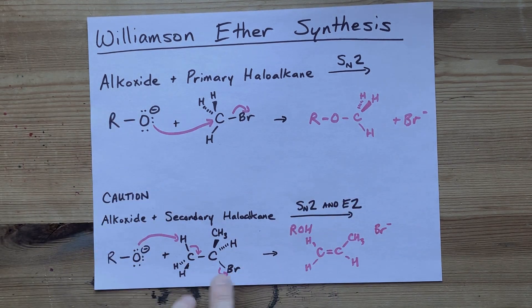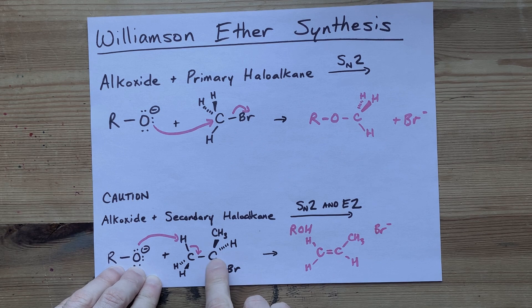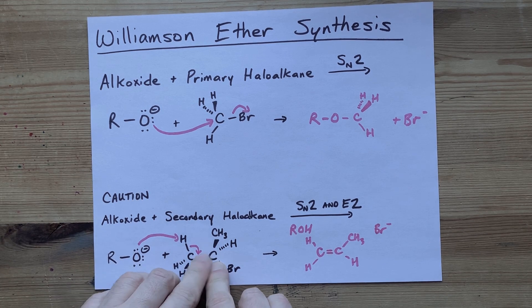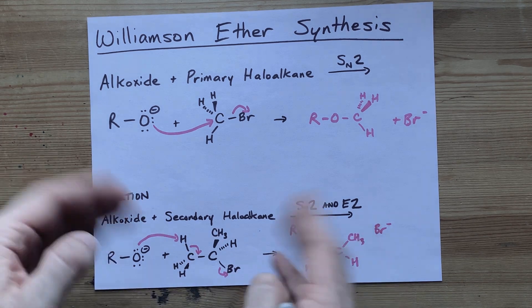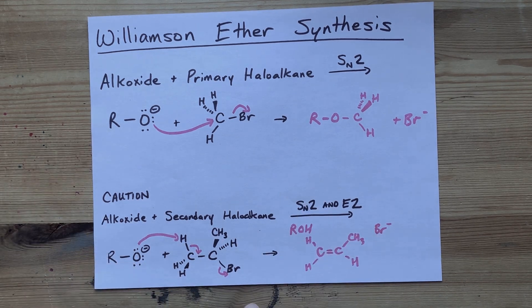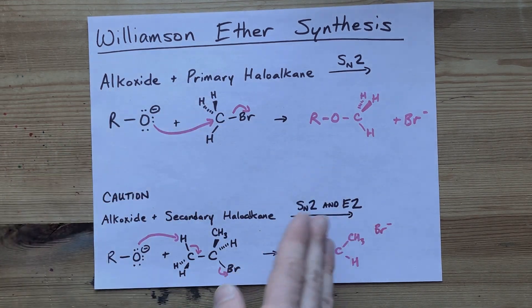You also get your Br- as a byproduct there as well. The point there is if it's a secondary haloalkane, and secondary means that the carbon with the bromine on it is connected to two other carbon atoms, E2 will compete against your SN2 and you won't get as much of a yield of ether as you thought.